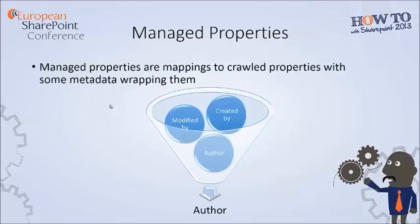Managed properties are metadata that can appear in refined searches. To make a crawled property available for refined search queries, you must map the crawled property to a managed property. Managed properties can have a large number of settings or attributes, and these attributes determine how the contents are shown in the search results. The search schema contains the attributes on managed properties and the mappings between crawled properties and managed properties. Managed properties represent a possible one-to-many mapping — for example, the crawled properties modified by, created by, and author are all mapped to the author managed property.